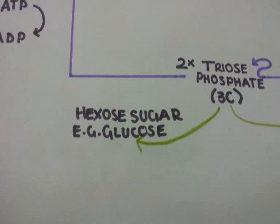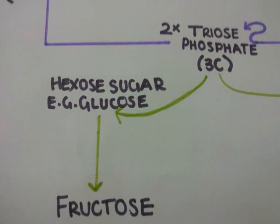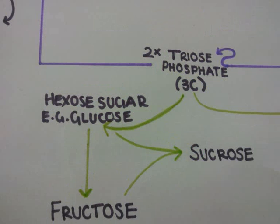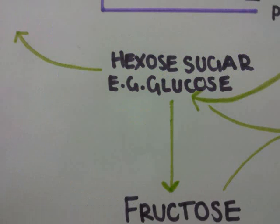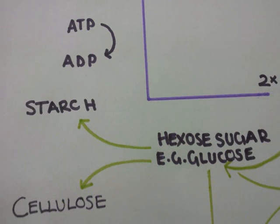Pairs of triose phosphate molecules combine to form hexose sugars such as glucose. Some glucose molecules may be isomerised to form another hexose sugar such as fructose. Glucose and fructose molecules may be combined to form the disaccharide sucrose, the sugar translocated in phloem sieve tubes. Hexose sugars can be polymerised into other carbohydrates such as starch, which are polysaccharides.